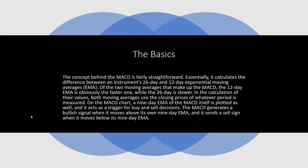The concept behind MACD is fairly straightforward. Essentially, it calculates the difference between an instrument's 26-period and 12-period exponential moving averages. A moving average is simply the calculation over — if it's a 12-period moving average — the last 12 periods of closing price, added together and divided by 12.